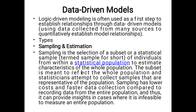Types of data-driven models. The first is sampling and estimation. Sampling is the selection of a subset or a statistical sample of individuals from within a statistical population to estimate characteristics of the whole population. The subset is meant to reflect the whole population. Samples have lower cost and faster data collection compared to recording data from the entire population, and thus can provide insight in cases where it is infeasible to measure an entire population.